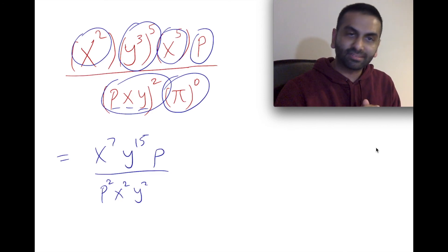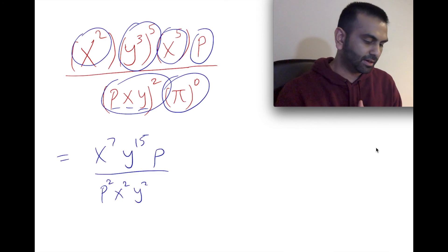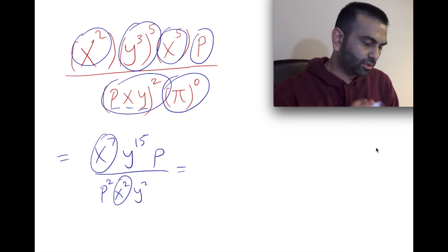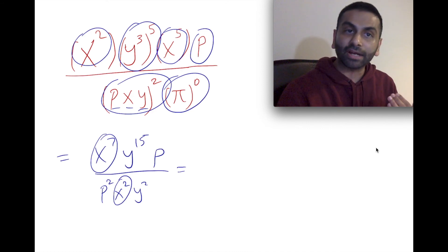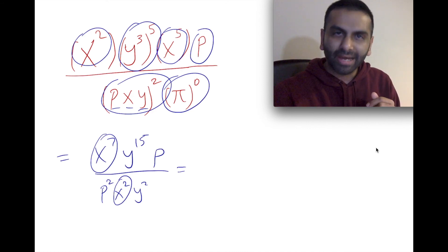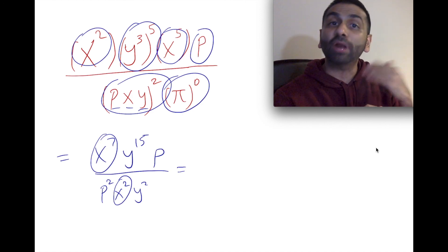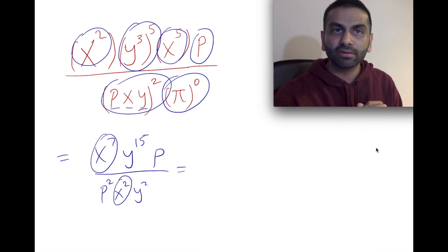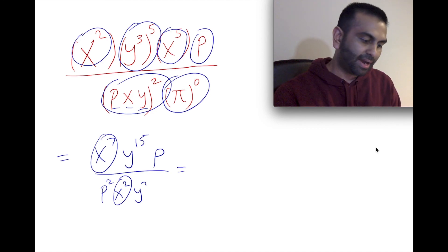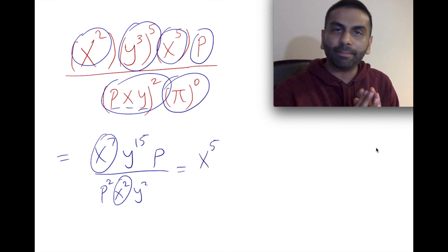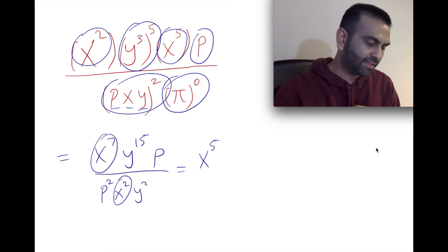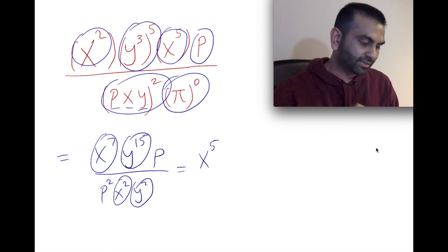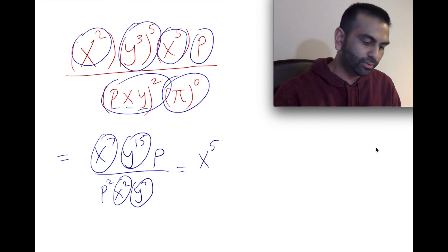Now I can simplify further by combining like variables. For the x's: x to the seventh on top divided by x squared on the bottom — division means subtract, so seven minus two equals five, giving x to the fifth on top. For the y's: y to the fifteenth divided by y squared — fifteen minus two is thirteen, giving y to the thirteenth.